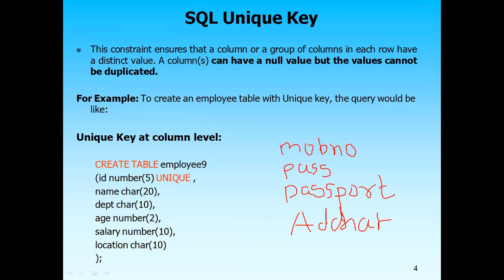Here we will see the syntax for creating a unique key. We will discuss the column level syntax. For the ID field, you declare the field ID, its data type and size, and by giving a space you can mention the word 'unique'. The 'keyword' is not required — you just say you want to make this ID unique. Logically ID should be a primary key, but just to learn this syntax, we have taken ID as a unique field here.